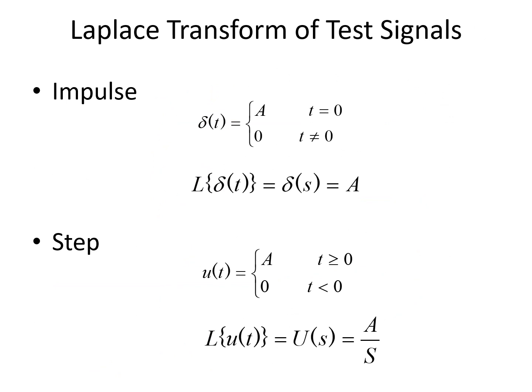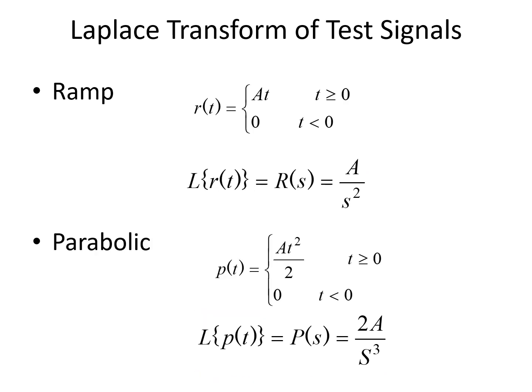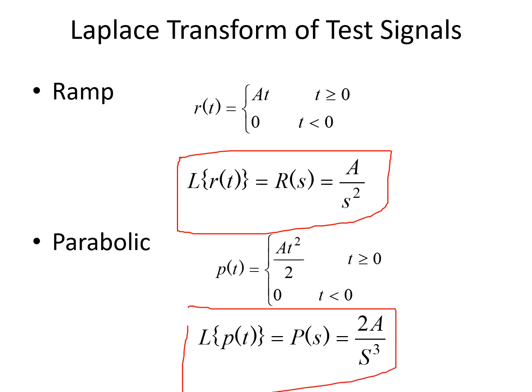Coming to the Laplace transform of these standard signals: the Laplace transform of the impulse signal delta(s) is taken as A, since the Laplace transform of a constant is always a constant. The Laplace transform of the unit step signal is A/s. The Laplace transform of the ramp signal is A/s². The Laplace transform of t²/2 is 2A/s³. These are the Laplace transforms of the four standard signals used for analyzing the feedback system.